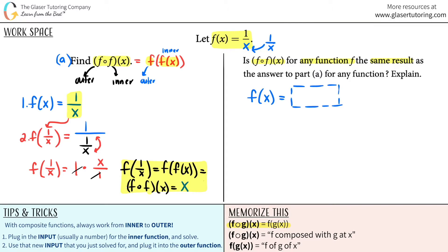and do the same exact thing that we just did? F of f of x for any function and still get only x as my answer? Cause the answer here was x. So that's what they're saying here. If I make up any function, any function at all, let's try to do the same exact composite function and let's see if we get the same answer.